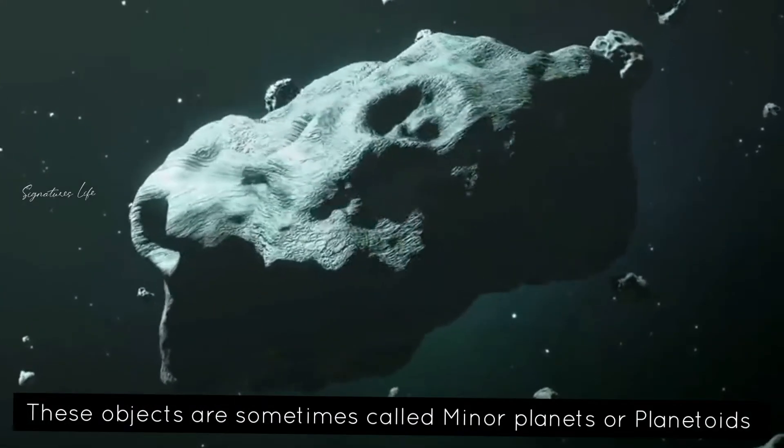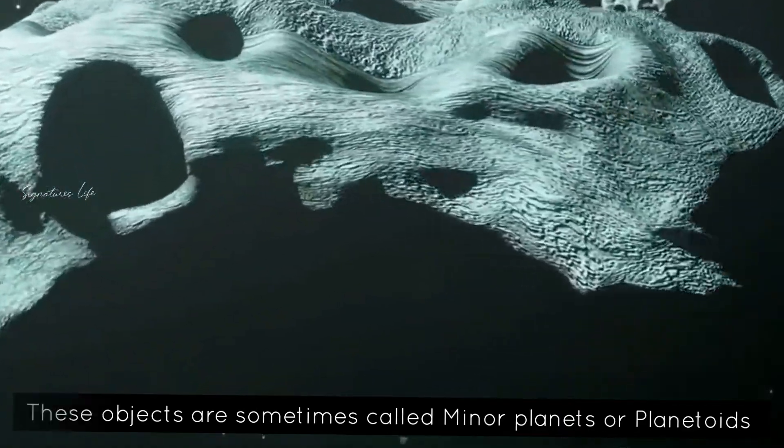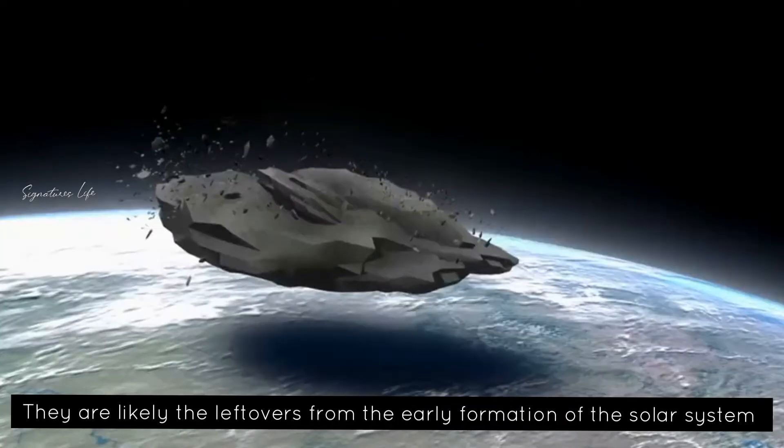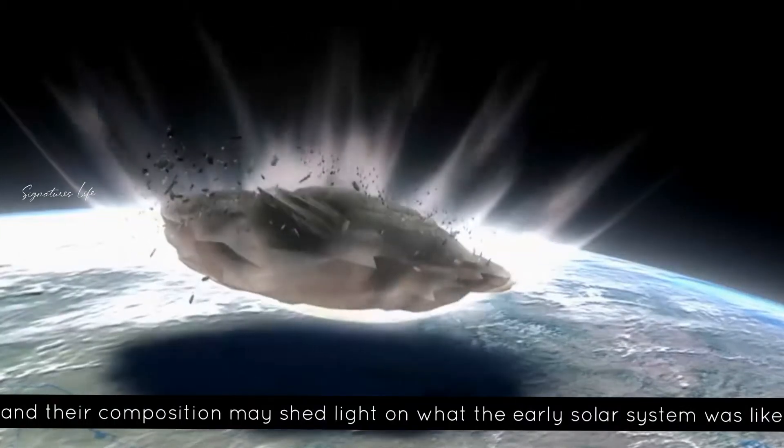These objects are sometimes called minor planets or planetoids. They are likely the leftovers from the early formation of the solar system and their composition may shed light on what the early solar system was like.